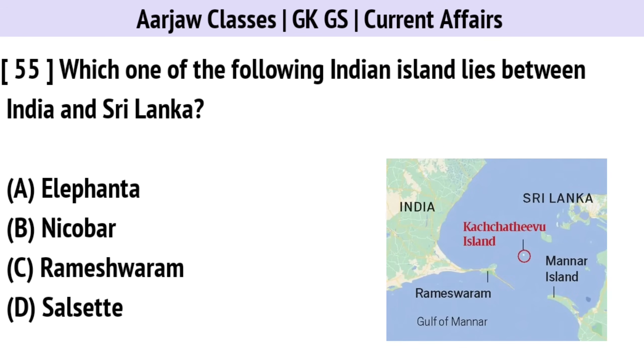Which one of the following Indian islands lies between India and Sri Lanka? The correct option is C — Rameshwaram.